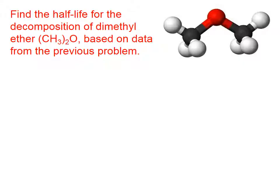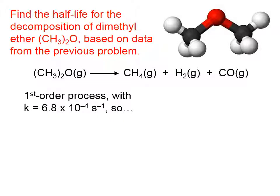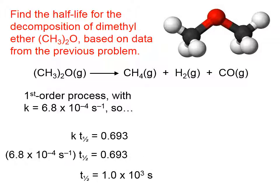Let's find the half-life for the decomposition of dimethyl ether, which is what we had in the previous problem. The rate constant was given in the earlier example. To find the half-life, kt₁/₂ equals 0.693. You take the rate constant times the half-life and you get 0.693. Since the rate constant is in seconds⁻¹, the half-life that comes out will be in seconds: 1.0 times 10³ seconds.